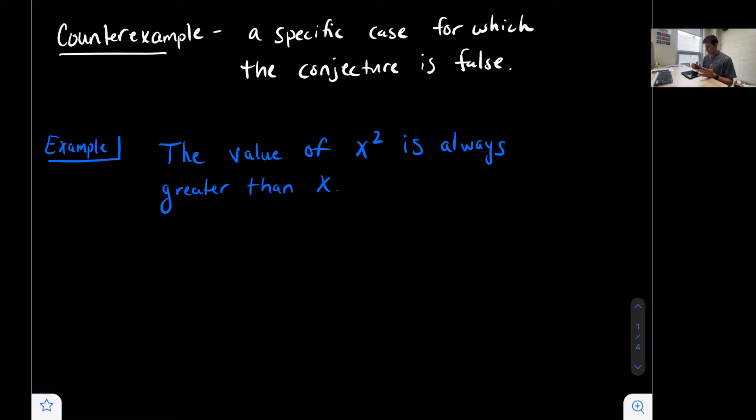So this example we're looking at here says the value of x squared is always greater than x. Well, for most of the time, that is true. We could say, for example, two squared is greater than two. So four is greater than two. And that's true. So far, so good.